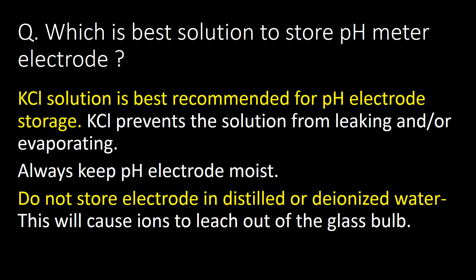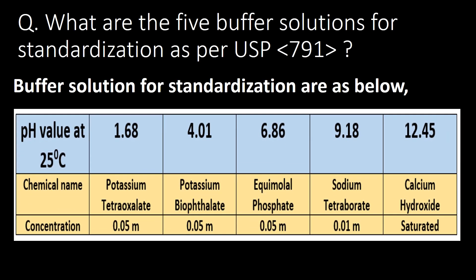Which is the best solution to store pH meter electrodes? KCl, that is potassium chloride solution, is best recommended for pH electrode storage. KCl prevents the solution from leaking or evaporating. Always keep the pH electrode moist and do not store the electrode in distilled or deionized water, as this will cause ions to leach out from the glass bulb.